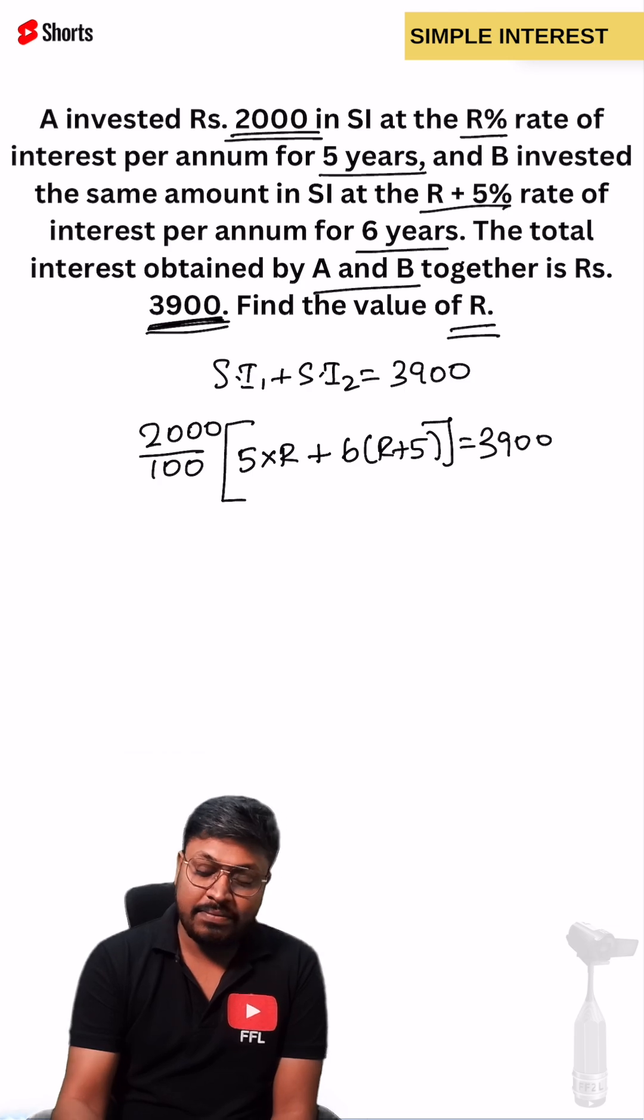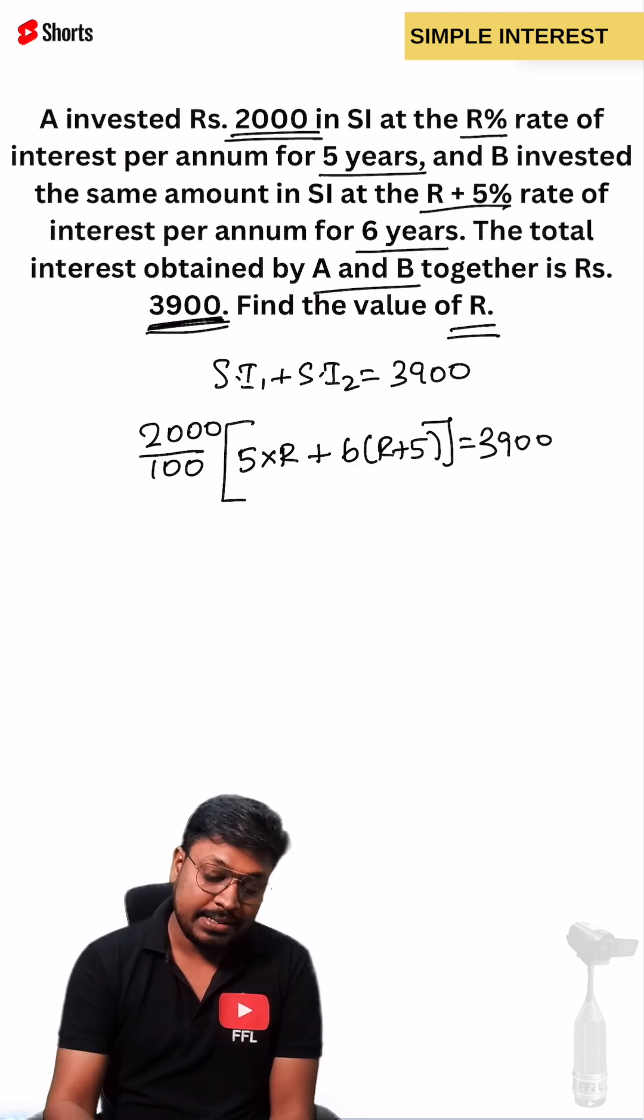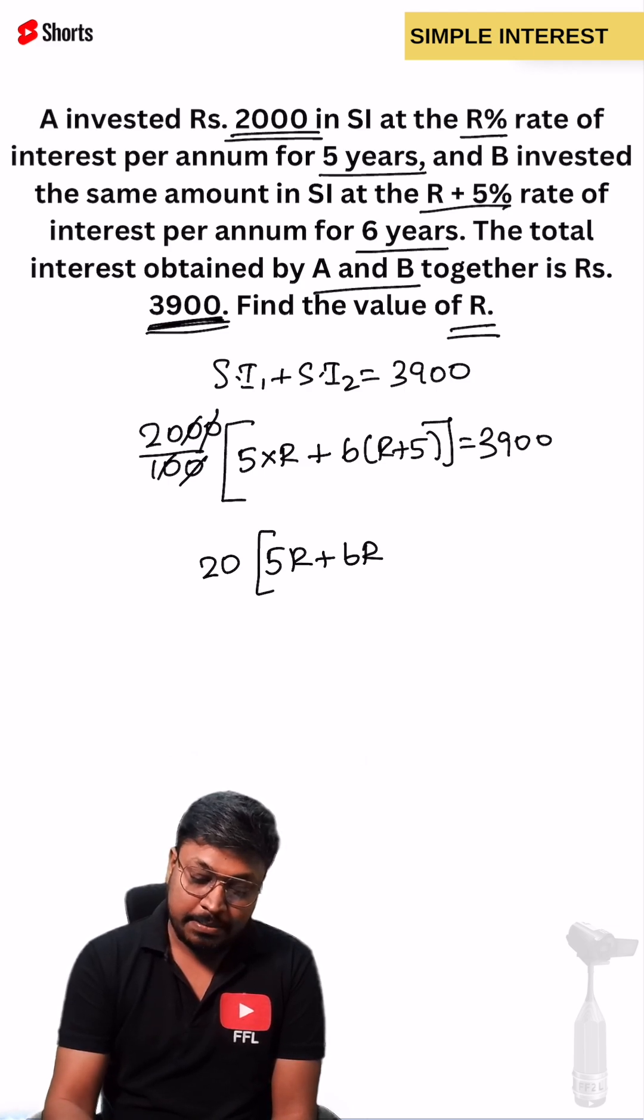Once you calculate, we can find what is the value of R easily. 2000 divided by 100 becomes 20. This will be 5R, plus 6R plus 30 equals 3900.